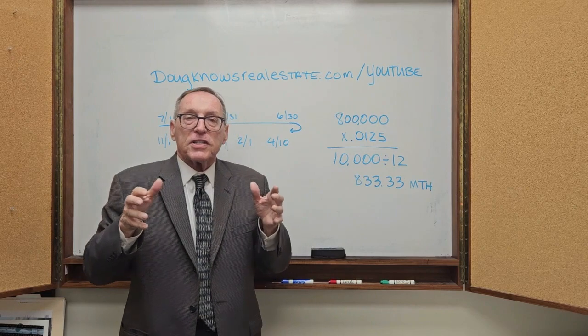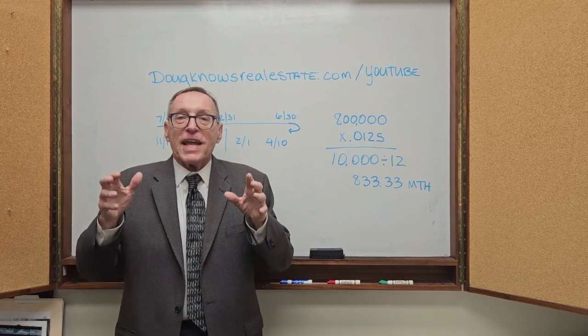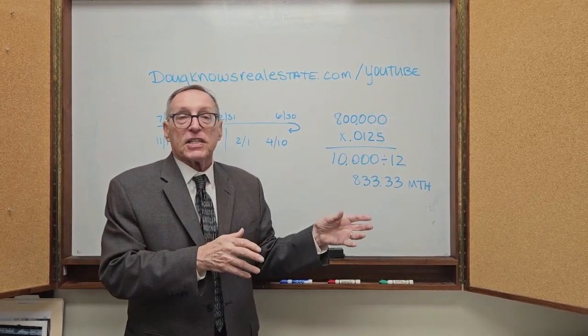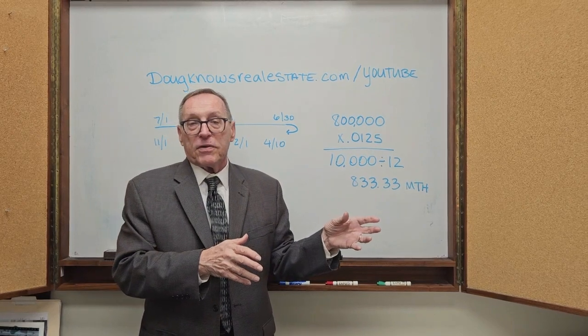The title company will set it up. The money will go to the lender. The lender has the money in escrow and the lender pays that money every six months to the County.